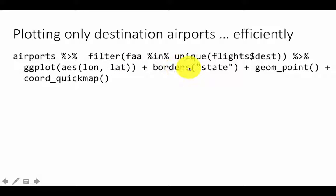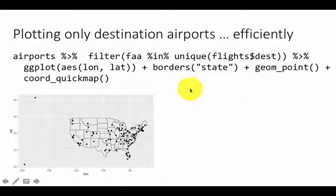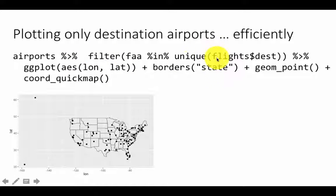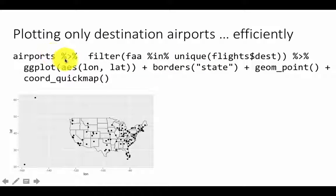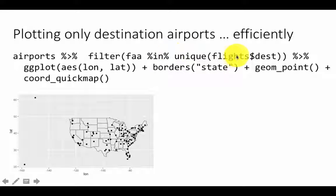By filtering the airports first and then doing the join, the result comes back much quicker because we have taken out a significant number of airports out of consideration. In fact, there is no join in the plotting step — we are only plotting the airports. We are taking care of the join by doing the filtering part. This is going to come back much faster than the previous one, but the net result is still the same.